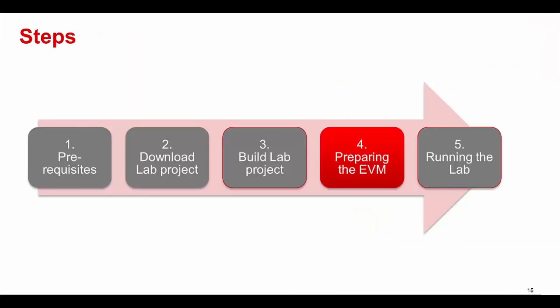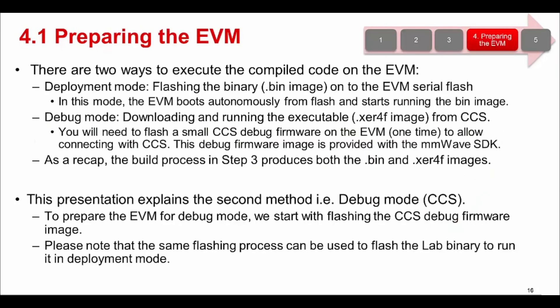We have now successfully built the project and are ready to flash the EVM with the generated image binaries. The compiled code can be run onto the EVM in two different modes. In the deployment mode, the binary image with the .bin extension can be flashed onto the EVM serial flash. In this mode, the EVM on power-on automatically boots from the flash and starts running the binary image. However, in this presentation we will explain the second method where we download and run the executable with the .xcr4f extension using CCS. We will need to flash a small CCS debug firmware on the EVM to allow the EVM to connect to CCS.